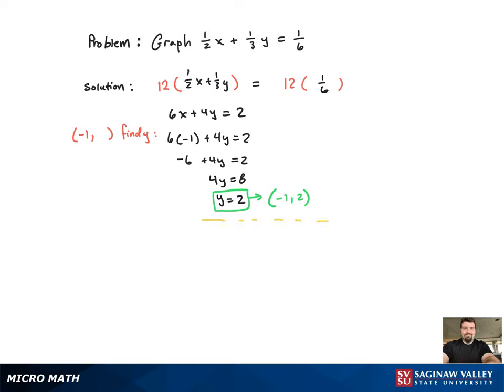Now we're going to find one more point. I picked negative 1 for the x coordinate the first time, now I'm just going to pick negative 1 for the y coordinate and find x. Plug it in. I get 6x minus 4 equals 2, then I add the 4, divide by 6, and now we have our second point.